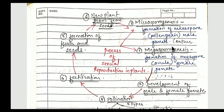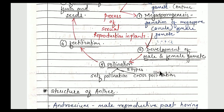Both microsporogenesis and megasporogenesis should be performed simultaneously. If the male gamete is properly developed but the female gamete is not, or vice versa, the zygote will not develop properly and the young ones may have disabilities. The second step is the simultaneous development of male and female gametes. After development, pollination is done — it may be self-pollination or cross-pollination. Self-pollination occurs when androecium and gynoecium are present in a single flower.